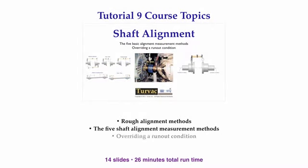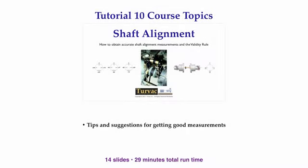In the tutorial on basic alignment measurements, you will see how to roughly align machinery shafts. You will also be introduced to all five alignment measurement methods and shown how to override a runout condition to ensure that the center lines of rotation are collinear. This tutorial will cover several tips, tricks, and techniques to ensure you get accurate alignment measurements. It will also explain what the validity rule is and how it can help you when measurements may be difficult to obtain.